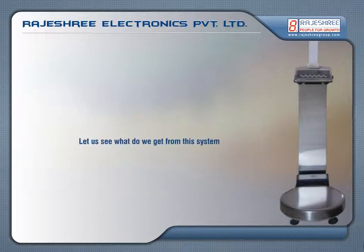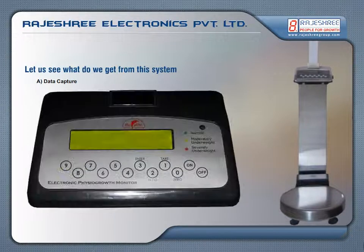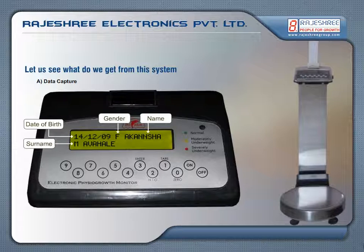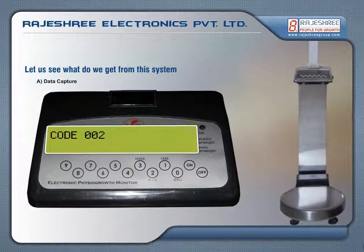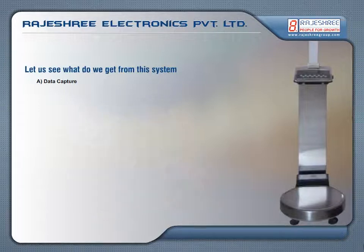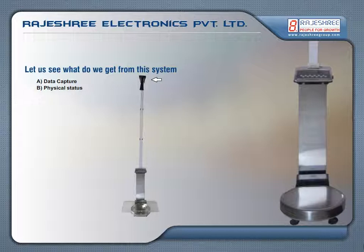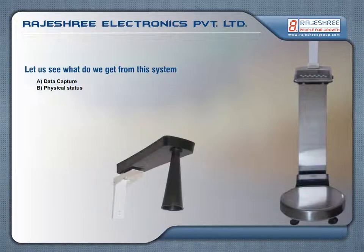Let's see what we get from this system. Data capture: (1) digitization of the beneficiary's personal information — name, date of birth, gender — duly aligned with a numeric code to facilitate easy storage and retrieval. Physical status — weight and height of the beneficiary — is captured automatically.